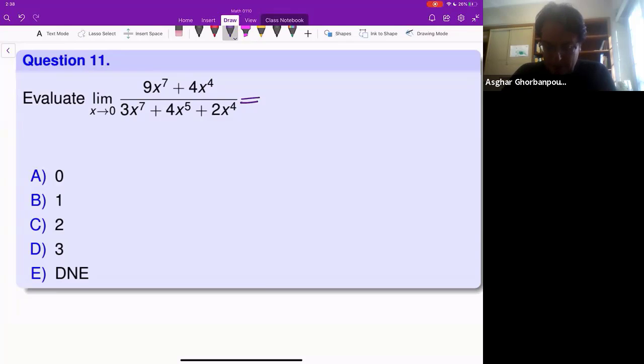So 3 times 0 to the power 7 is 0, 4 times 0 to the power 5 is 0, 2 times x to the power 4 is 0. So the denominator is 0, and you do the same work with the numerator. If you get 0...